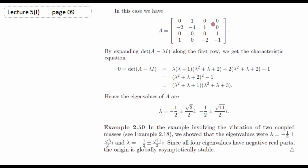ایک اور example: ایک 4×4 constant matrix۔ Characteristic equation ایک fourth order polynomial بنے گی۔ اس سے چاروں eigen values complex ہیں لیکن چاروں کا real part negative ہے — مثلاً: -1/2 ± (√3/2)i اور دو اور complex conjugate pairs۔ جب تمام eigen values کا real part negative ہو تو system globally asymptotically stable ہے۔